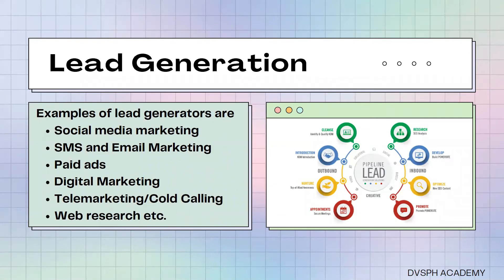Lead generation is one of the in-demand jobs in VA, because most businesses in the U.S. and other parts of the world are looking for customers or clients who may get or avail their services or products. There are different types of lead generation. Once we say lead generation, it's not just focused on calling — it can be social media, which is the most in-demand lead generation process. We are getting leads through social media marketing.